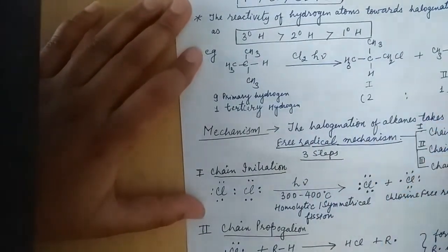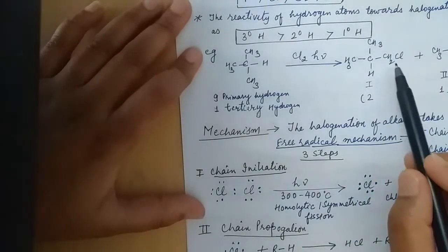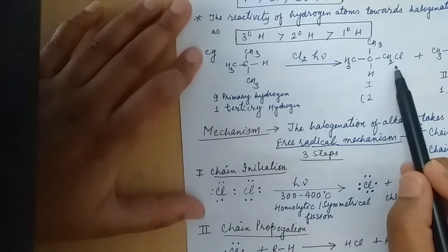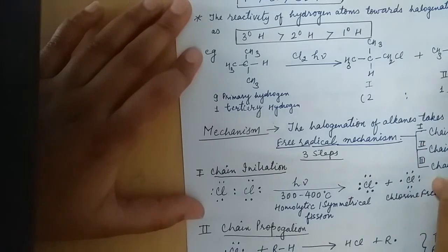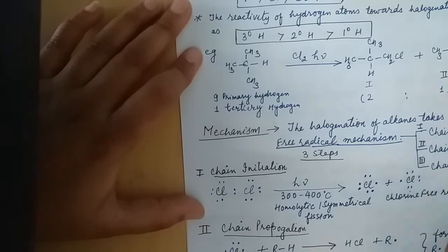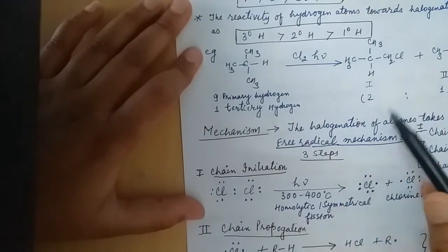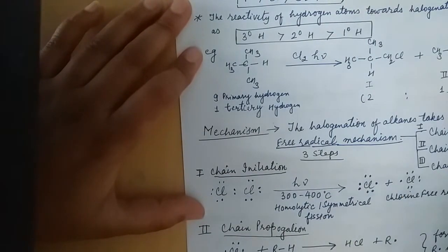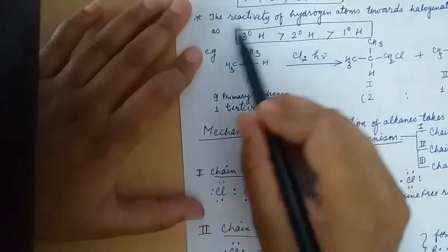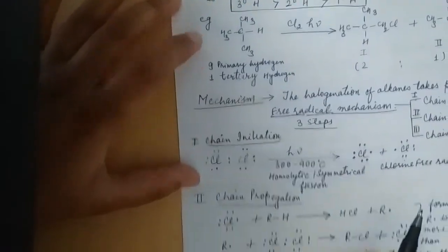In this condition we get two substituted products. These products are formed in a 2 to 1 ratio — 9 primary hydrogens versus 1 tertiary hydrogen — made in a 2 to 1 ratio. That means the tertiary hydrogen is more easily replaced in the free radical mechanism.